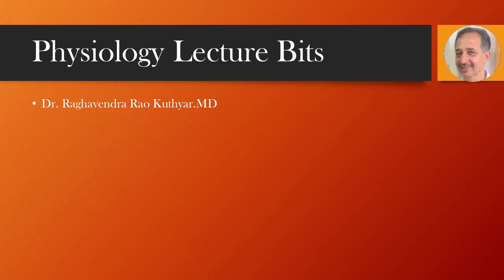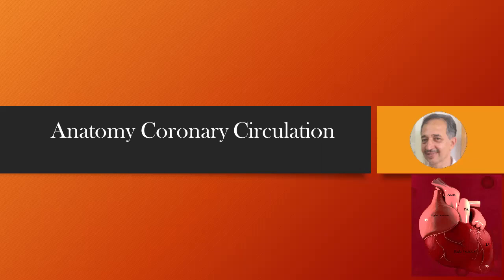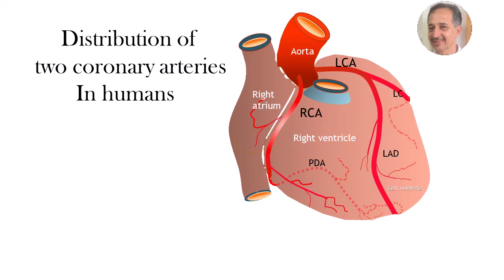This video deals with the salient features of coronary anatomy. The coronary arteries are the very first branches of the aorta. The two major branches, the left and the right coronary arteries, arise from the coronary ostia, which are present in the aortic sinus of Valsalva, just distal to the aortic valves.